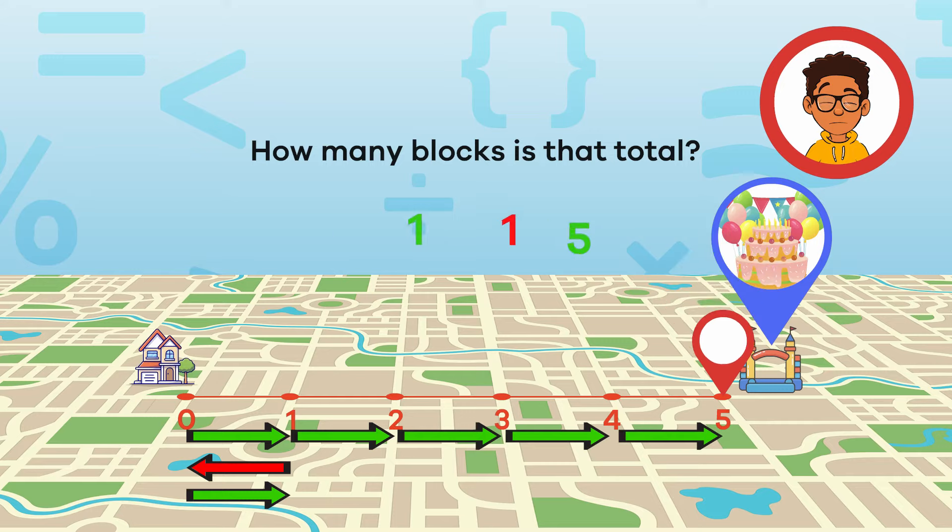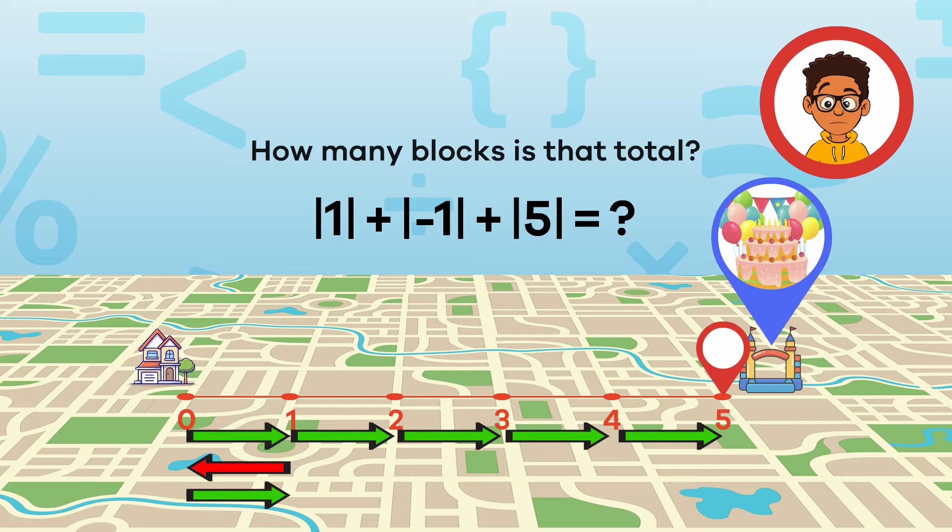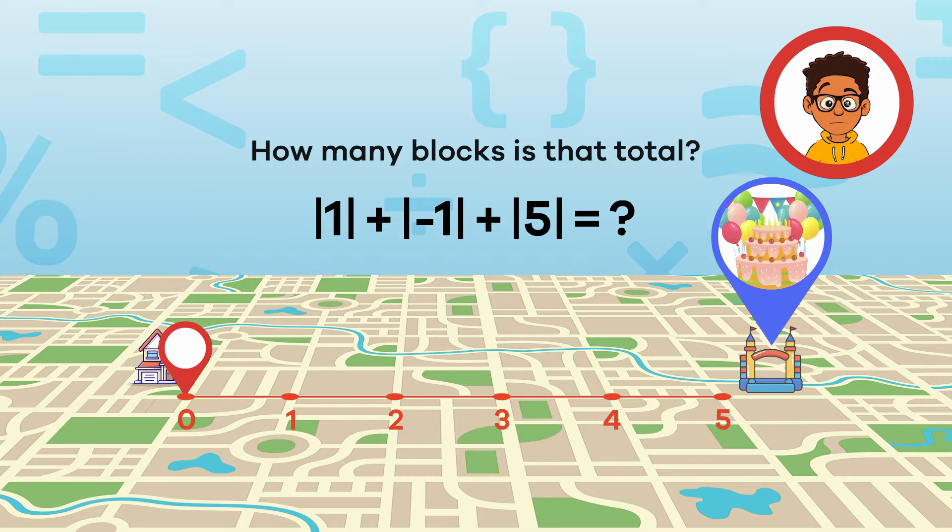To find out, let's create an equation using absolute value. Do you see how we got there? You walked 1 block forward, 1 block back, and then 5 more forward, for a total of 7 blocks.